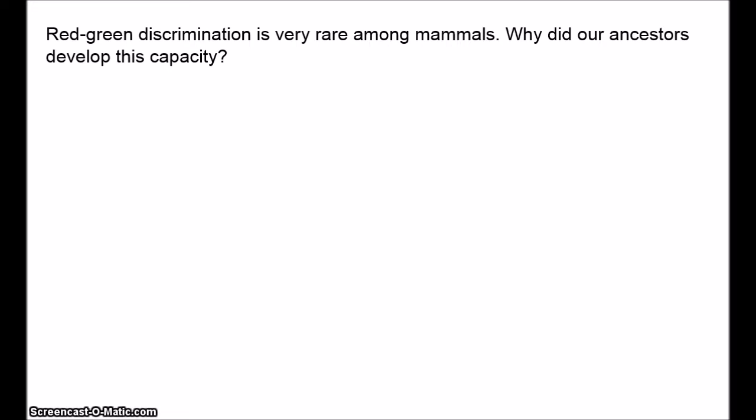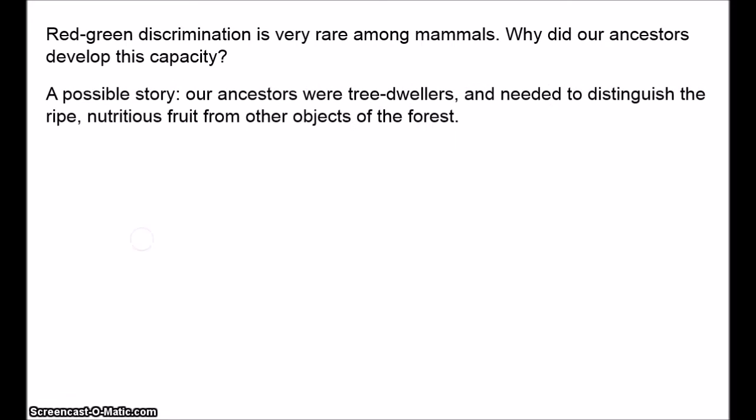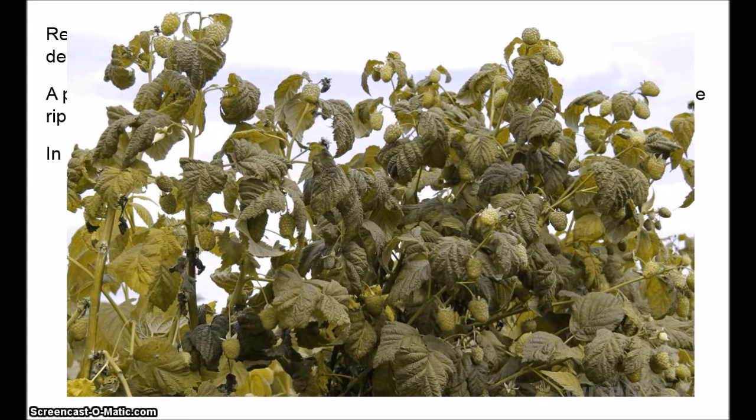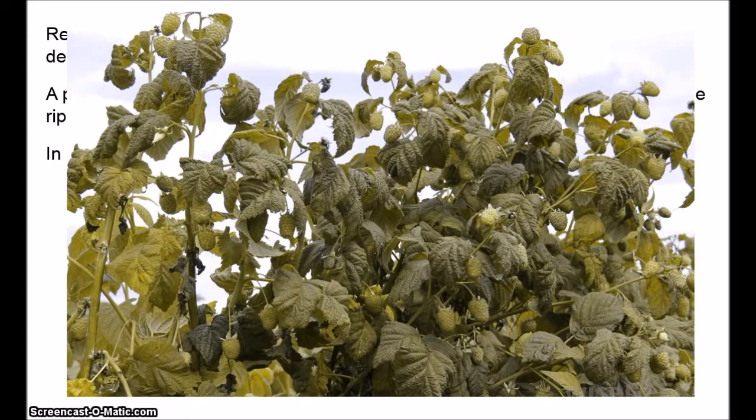Let's take another example. Our ancestors were dichromatic. Yellow-blue discrimination evolved a very long time ago, about 500 million years ago. Among mammals, trichromacy evolved only in the last 65 million years and is still very rare — only a few mammals have red-green discrimination. So why did our ancestors develop red-green discrimination? One possibility is that our ancestors were tree dwellers who needed to distinguish ripe fruit from trees, because ripe fruit provides much better nutrition. But living in jungles and forests, under dichromatic vision, everything in a forest looks pretty much the same. Here's an image of a foresty scene as it might look to something with dichromatic vision — the kind of thing a dog might see.